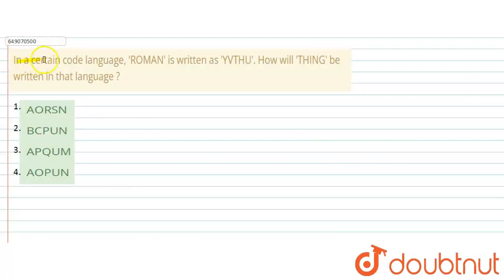The question says: in a certain code language, ROMAN is written as YVTHU. How will THING be written in that language?